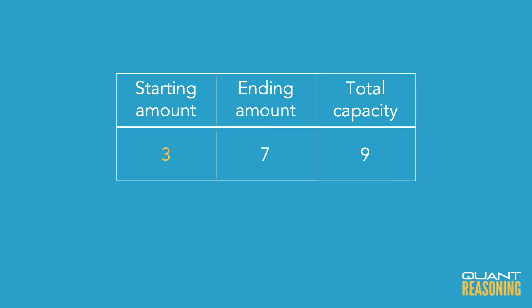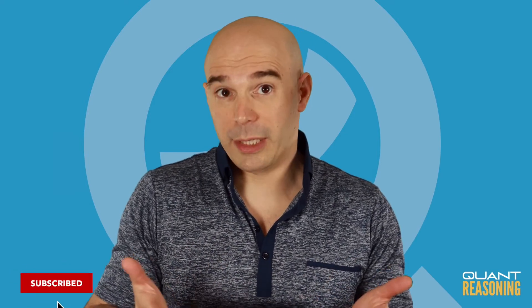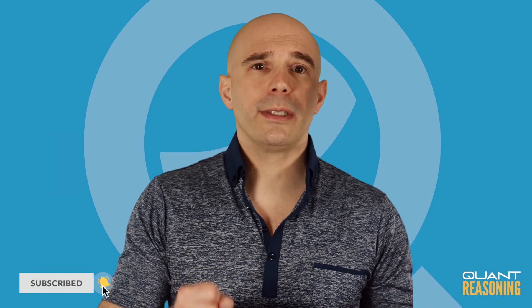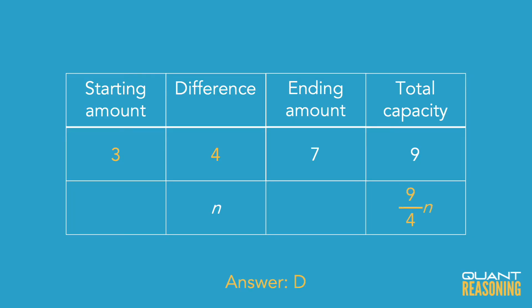Now we're told that those four ratio units increase map out to N, and we want to know what nine ratio units would map out to. Nine ratio units is exactly nine-fourths as much as four ratio units — by definition, that's what a ratio means. So if the four ratio units are N, nine ratio units would be nine-fourths of N. So it looks like the correct answer choice here is D.